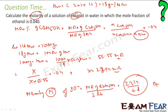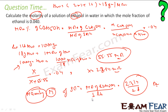We assumed 1000 grams of water, found the moles of water, substituted into the mole fraction equation, found the moles of ethanol, and then calculated molarity. Since 1000 grams of water equals 1 liter, we assumed the density of water is 1 gram/mL.